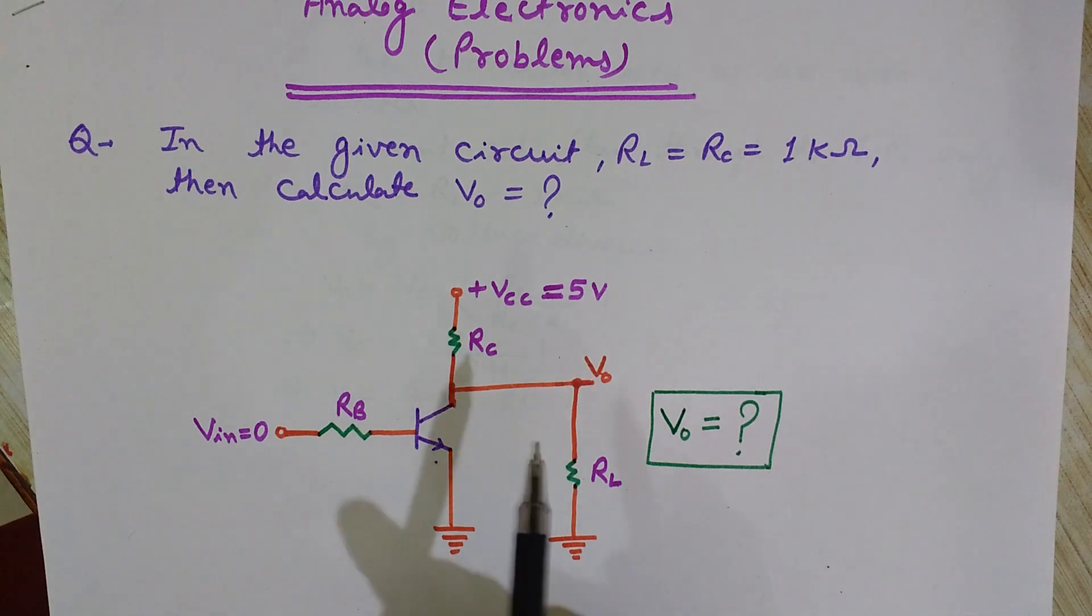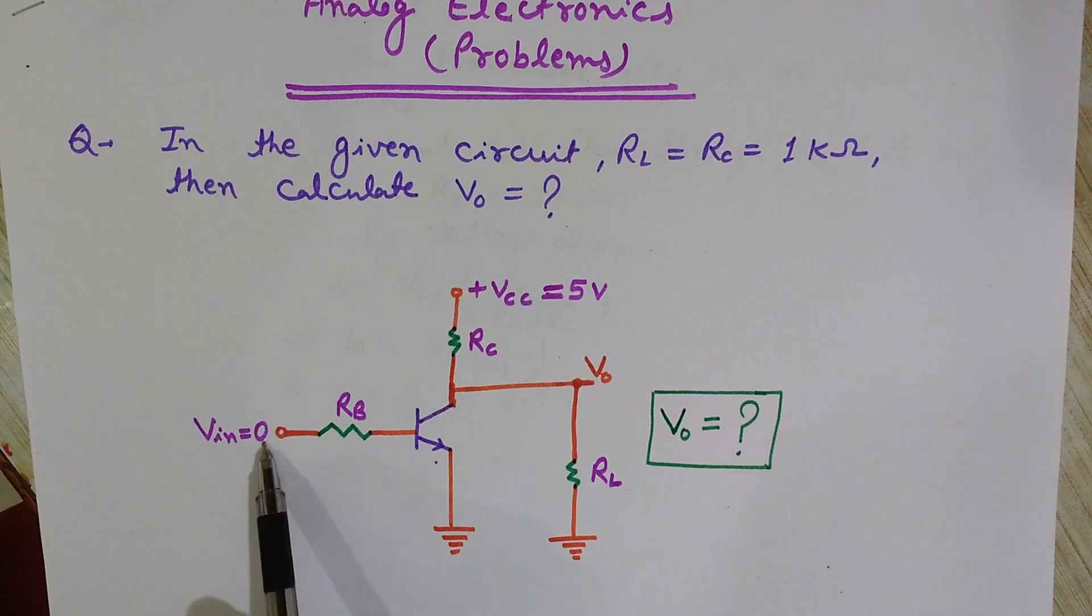So to calculate V0, first of all look at this. Here it is given that VIN is 0, so no voltage is applied at the base terminal of the BJT.